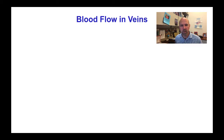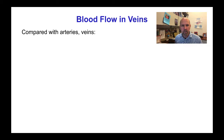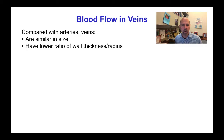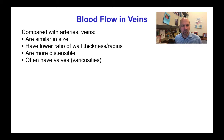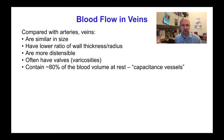Today we'll discuss some of the properties of blood flow that are particular to veins and the microcirculation. Compared with the arteries, veins are similar in size but have a lower ratio of wall thickness to radius and as a result are more distensible. They often have valves or varicosities and they contain about 80% of the blood volume in the body at rest. This is the reason that the veins are often referred to as the capacitance vessels.